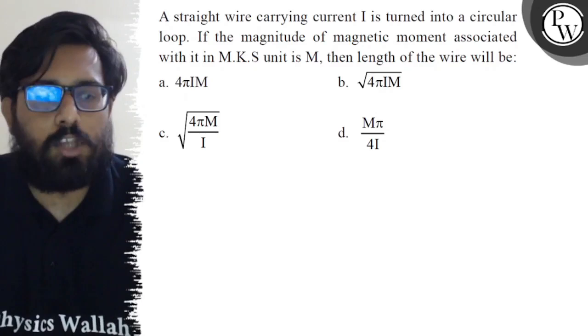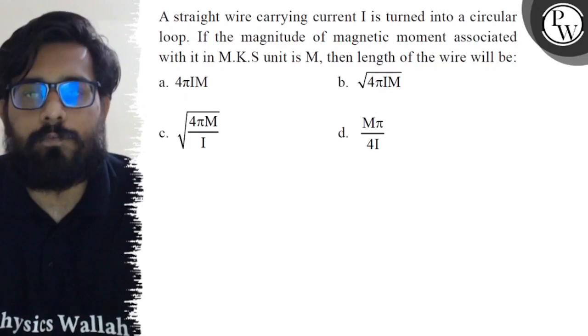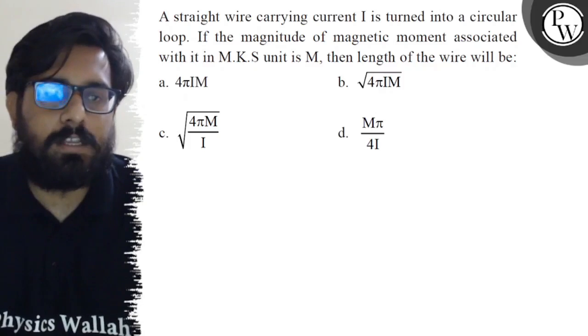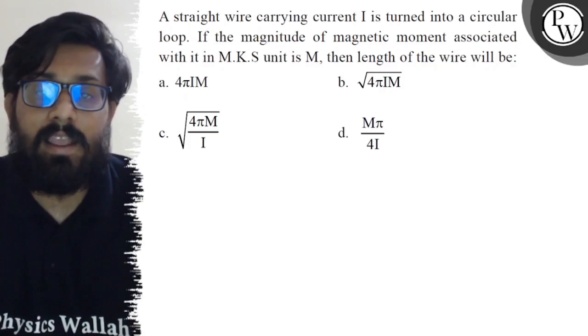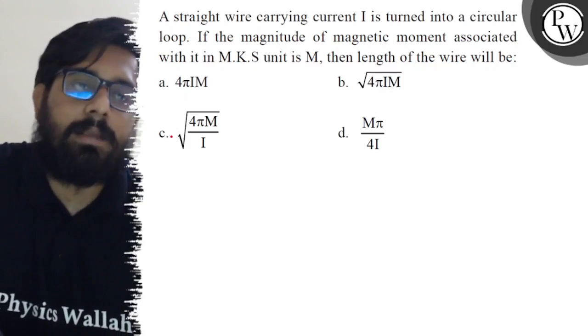Your first option is 4πIM, your second option is √4πIM, third option is √(4πM/I), and your fourth option is Mπ/4I. So here in this question we have to find out the length of the wire.